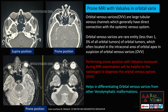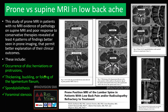Prone position is also useful in low back imaging. In supine patients, disc herniations, ligamentum flavum thickening, spondylolysis, or foraminal stenosis may not be clearly seen. Here you can see disc herniation is clearly depicted in prone, ligamentum flavum thickening is clearly depicted in prone, spondylolysis is better demarcated in prone, and foraminal stenosis is more clearly depicted in prone than in supine position.